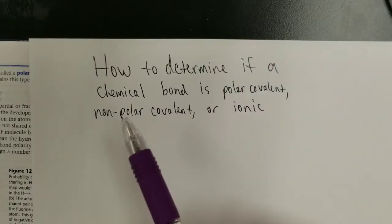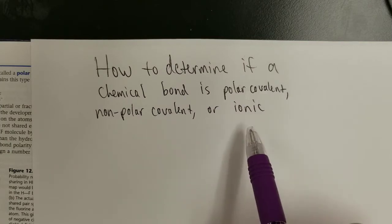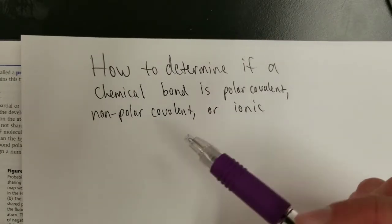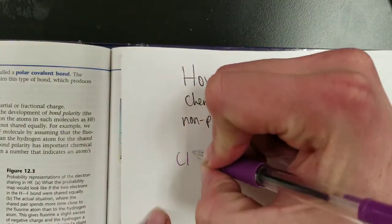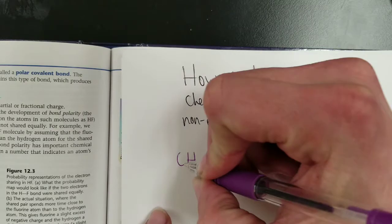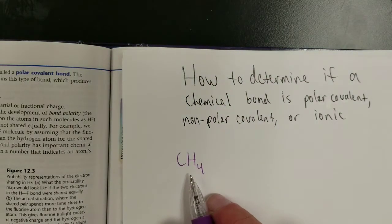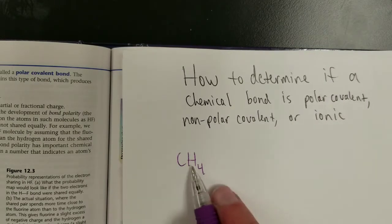All right, let's look at how you would go about determining whether a given chemical bond is polar covalent, non-polar covalent, or ionic. First of all, in order to do that, let's look at an example.